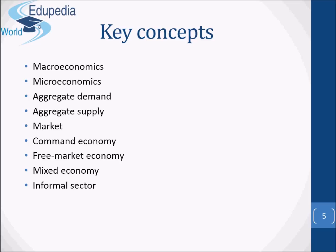When we talked about the different economic systems, we talked about the centrally planned, or in other words, command economy, which is an economy where all economic decisions are taken by the central authorities. As for the free market economy, it is an economy where all economic decisions are taken by individual households and firms, with no government intervention.